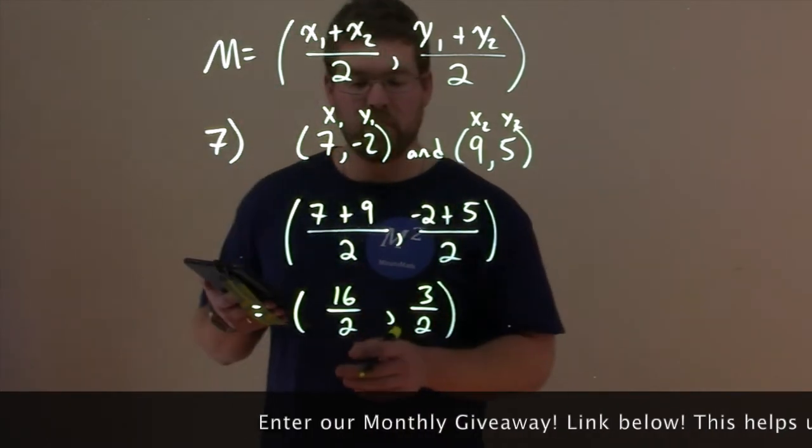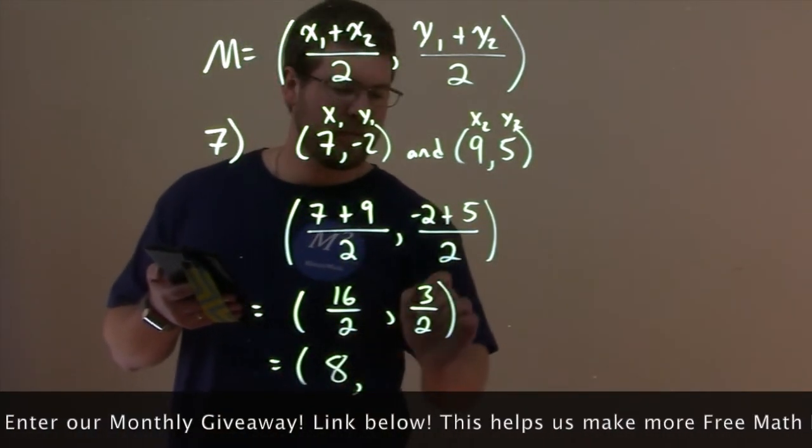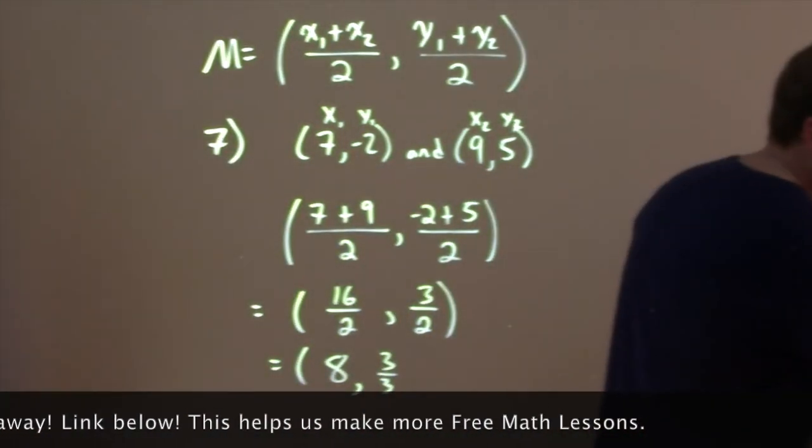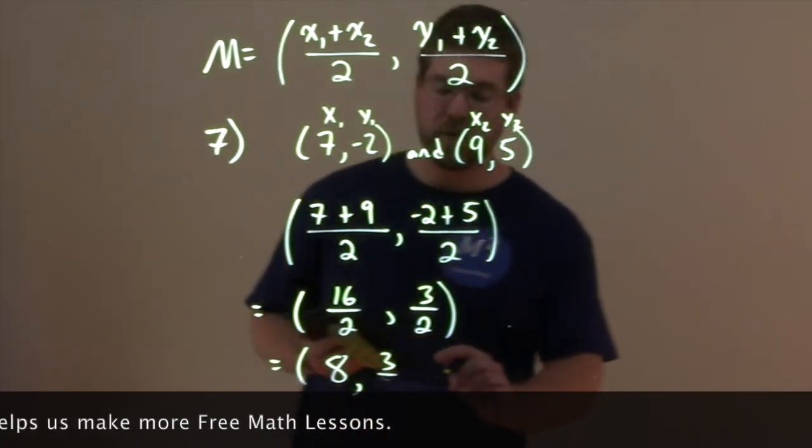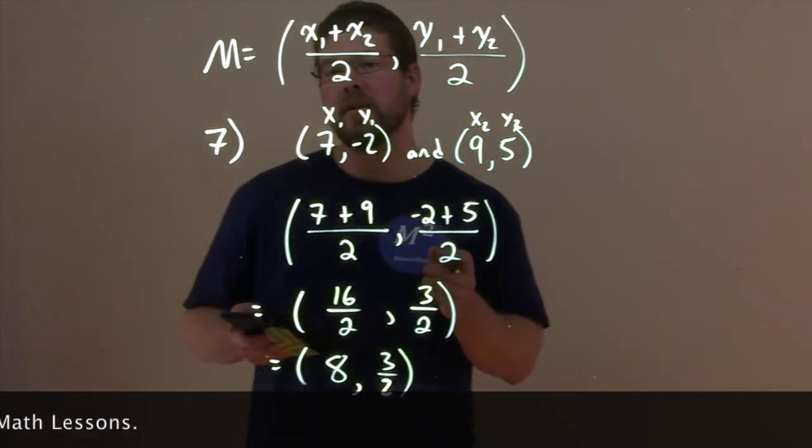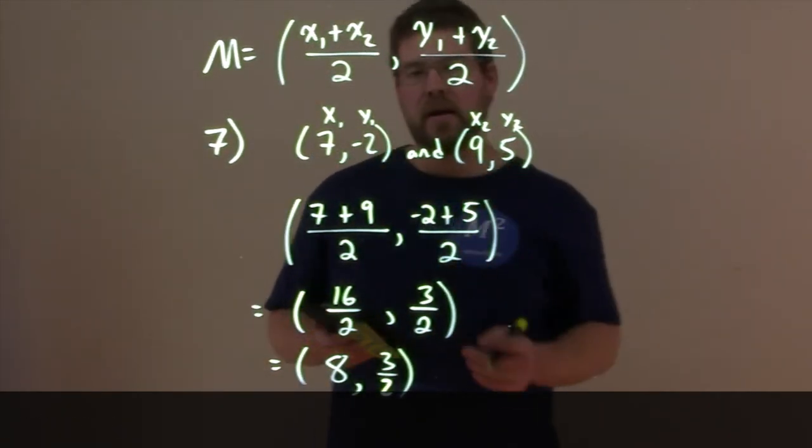We can simplify that even more. 16 divided by 2 is 8, and 3 over 2 is 3 halves. So our midpoint here is 8, 3 over 2 for our points 7, negative 2, and 9, comma 5.